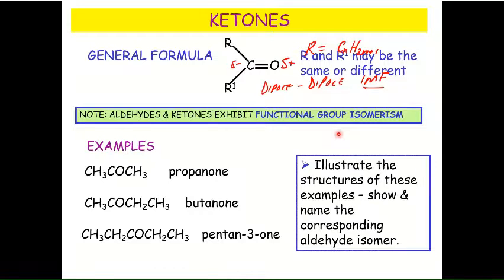Pentan-2-one does exist. If you had this carbonyl group on the second carbon, it would be pentan-2-one. So there you've got isomers, and they would be what kind of isomer? Not functional group isomers - they would be positional isomers.